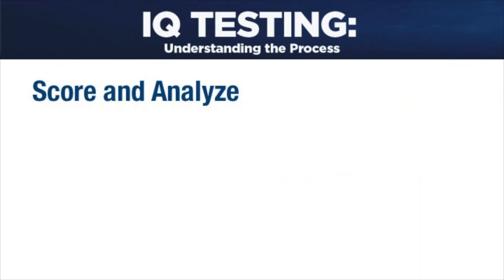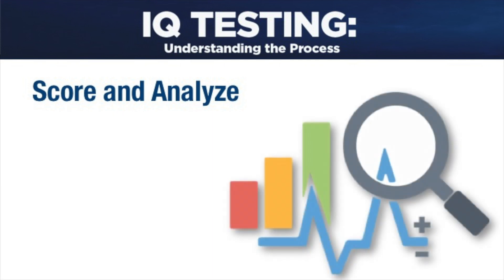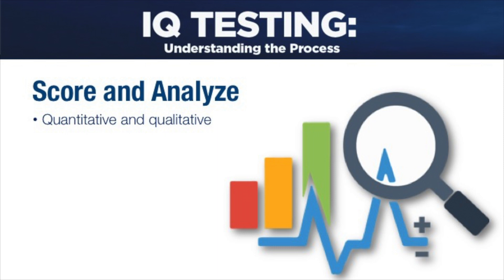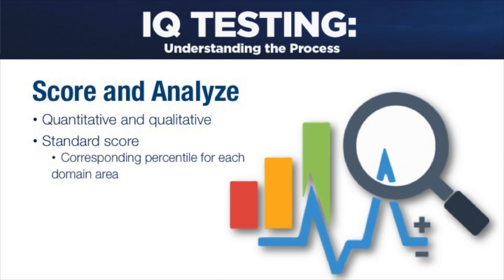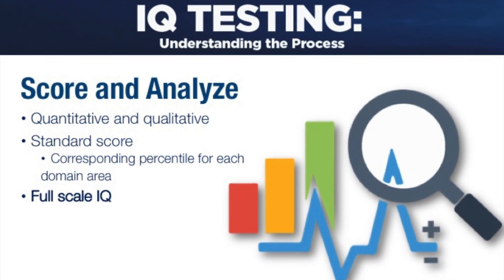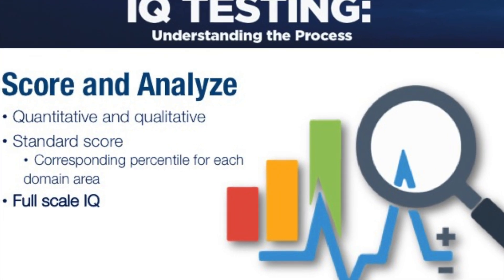Not only is this accurate, but it may also provide relief from any added pressure they may be experiencing. Once the administration of the IQ test is complete, the examiner must score and analyze the results both quantitatively and qualitatively. Both are equally important, meaning we are just as much interested in the approach the student employed during complicated items, their attention and concentration level, strategies they used, motivation, and problem-solving techniques. You will receive a standard score and corresponding percentiles for each of the five domain areas, as well as the full scale IQ score, which is a combination of the five domain areas.